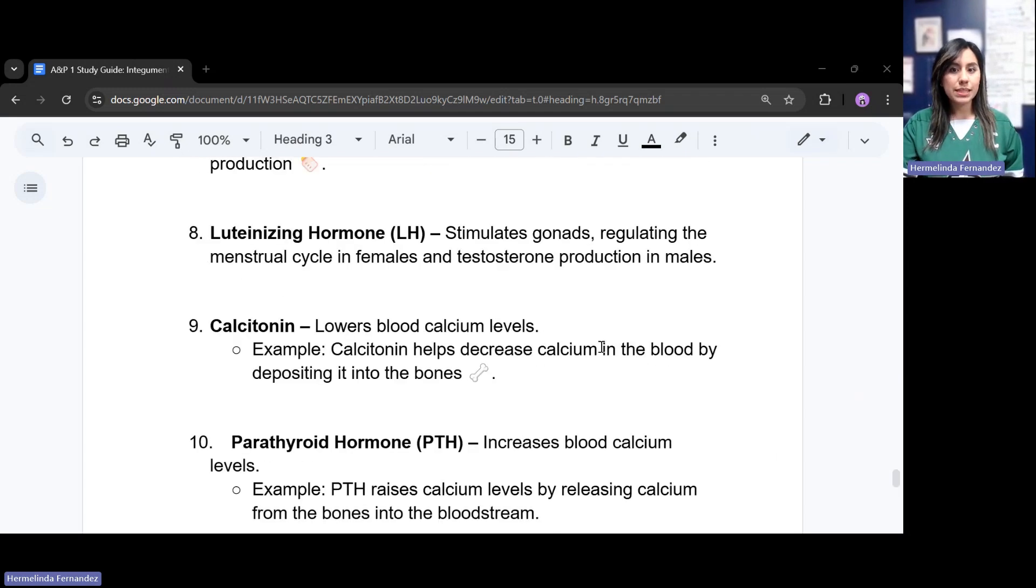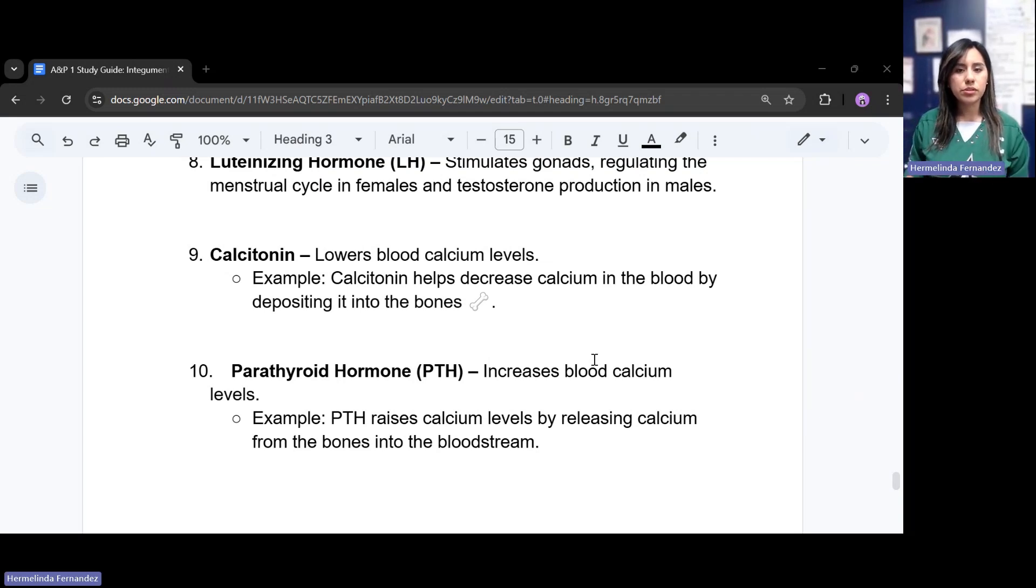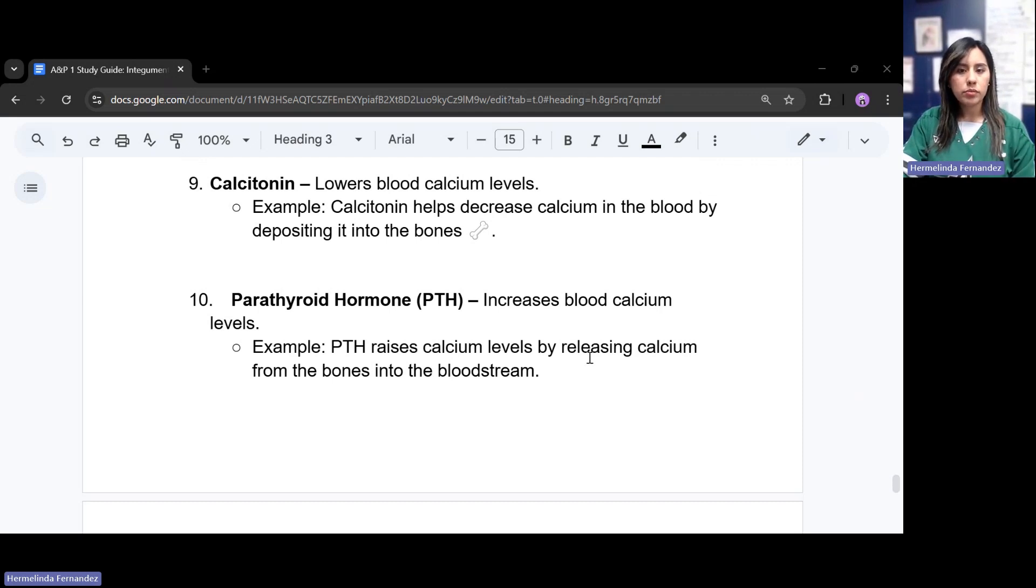The luteinizing hormone stimulates gonads, regulating the menstrual cycle in females and testosterone production in males. Calcitonin lowers those calcium levels. Calcitonin helps decrease that calcium in the blood by depositing it into the bones. We don't want that all in the blood, we want to pour it into the bones. The parathyroid hormone, or PTH, increases blood calcium levels. PTH raises calcium levels by releasing calcium from the bones into the bloodstream.